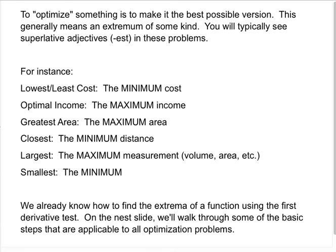For instance, you'll see lowest cost or least cost, which would mean the minimum cost. Optimal income would mean the maximum income. Greatest area, maximum area. Closest means minimum distance. Largest might mean the maximum volume, area, whatever, depending on the context of the problem. And if you hear smallest, it means the minimum of something - minimum area, minimum volume, whatever the context of the problem is.